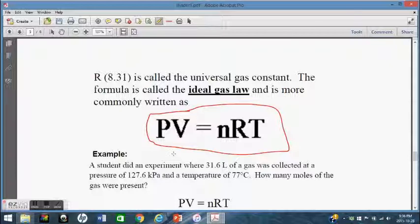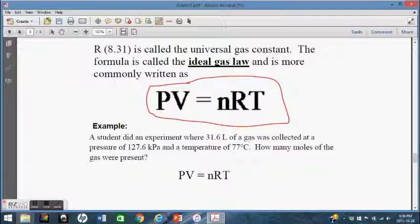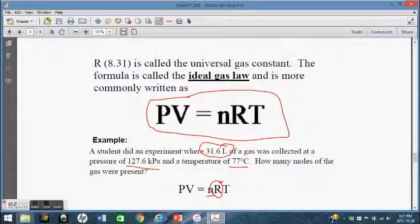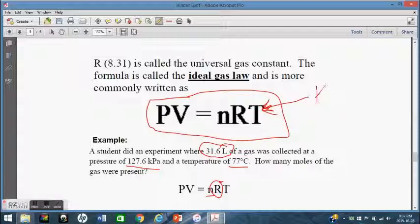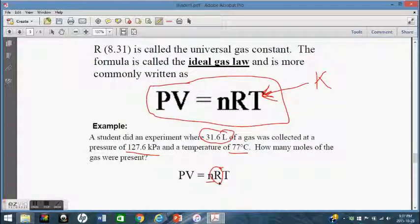Now, a student did an experiment. Here's an example. 31.6 liters of gas was collected at a pressure of 127.6 kilopascals and a temperature of 77 degrees Celsius. How many moles of gas were present? So we have pressure. There it is. We have volume. There it is. We want to find N. We know R, 8.31 or 8.314 on your data sheet. T. We're given that. Now we've got to be careful. This has to be in temperature. It needs to be in Kelvins. So we've got PV is equal to NRT. We need to change this 77 Celsius into Kelvins, and so we add 273. 77 plus 273. Punch those numbers correctly in our calculator. We get 350 Kelvin.